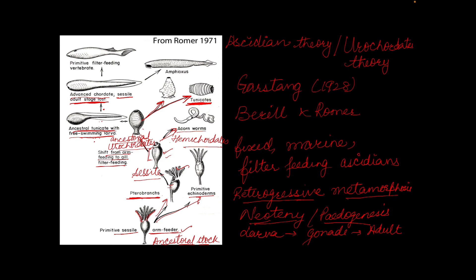From these free-swimming neotenic adult forms, two lines arose. One line gave rise to amphioxus, that is the cephalochordates. The other line led to the evolution of primitive filter-feeding vertebrates, which in due course of time evolved into higher vertebrates. This is the Ascidian theory of the origin of chordates.